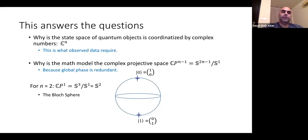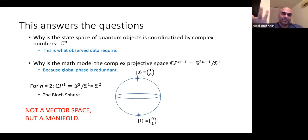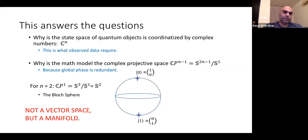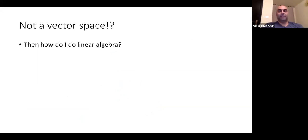Worse: this space where qubit states live is not a vector space — it's a manifold. If it's not a vector space, how have people been doing linear algebra in quantum computing all these years? That has to do with Wigner's famous theorem, which says that the dynamics of your qubit space are still linear and unitary. You started with a vector space C^N, took out the global phase, and ended up with something that's not a vector space — but the dynamics on it are still linear and unitary, as if they're happening in the original space.